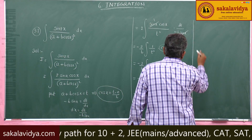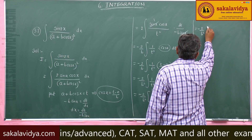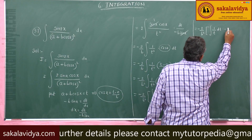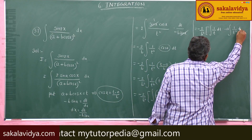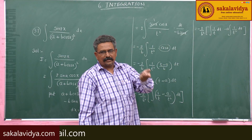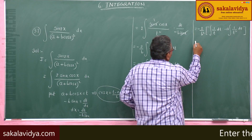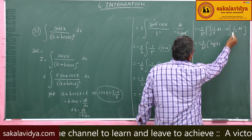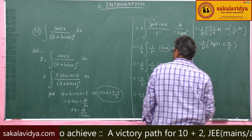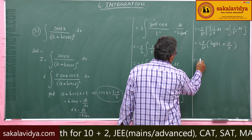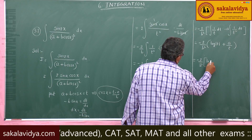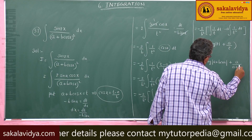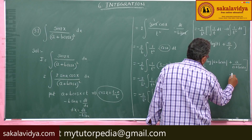Separating the terms gives minus 2 over b squared times the integral of (1 over t) dt, minus a times the integral of (1 over t squared) dt. Integrating yields minus 2 over b squared times log|t| plus a over t. Since t equals a plus b cos x, the final answer is minus 2 over b squared times log|a plus b cos x| plus a over (a plus b cos x) plus a constant of integration.